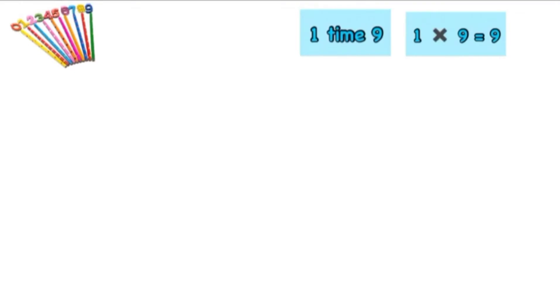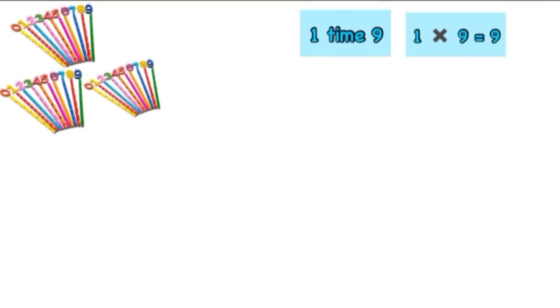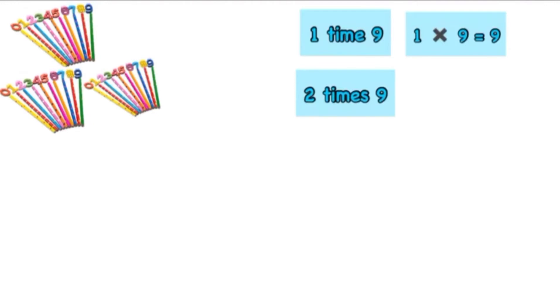First, we have one set of nine pencils, so we can read it as one times nine and write it as one multiplied by nine, and it is equal to nine. Next, when we add one more set of nine pencils to that one set, it becomes two sets of nine pencils. We can read it as two times nine, written as two multiplied by nine, and it is equal to 18.